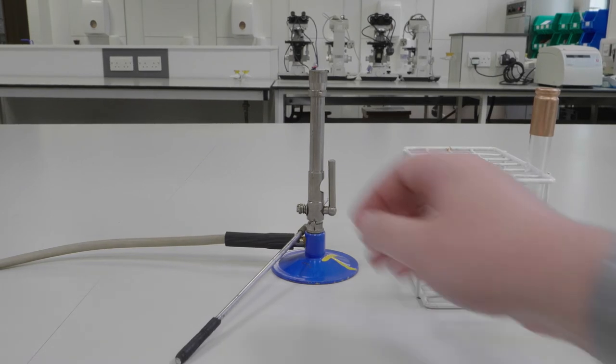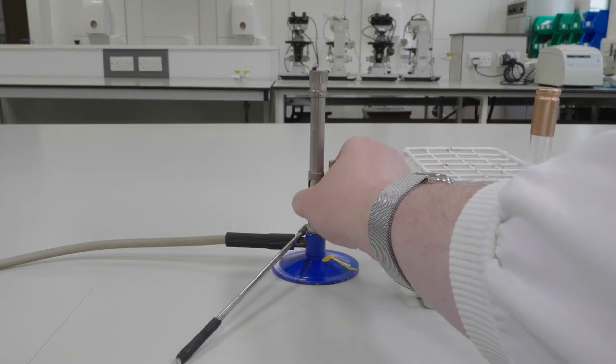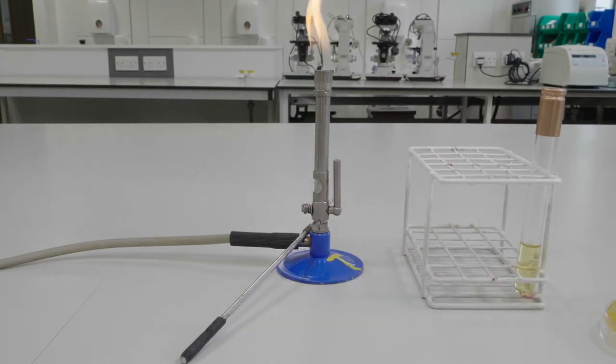And that's it. All you need to do is label your tubes with your initials, date and bench number and place them for incubation.